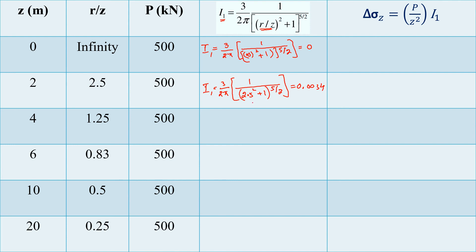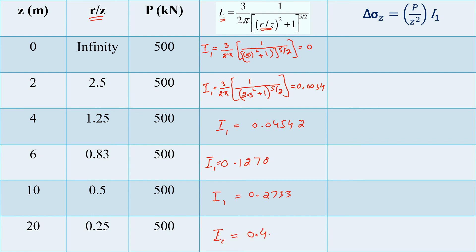Continuing with the remaining r/z values: for z = 6 (r/z = 0.83), I1 = 0.1278; for z = 10 (r/z = 0.5), I1 = 0.2733; and for z = 20 (r/z = 0.25), I1 = 0.4103.